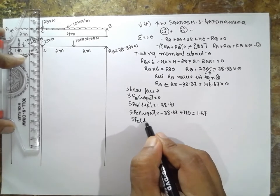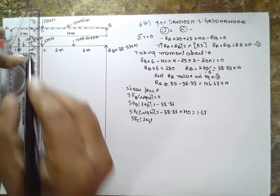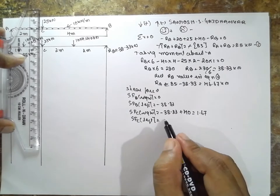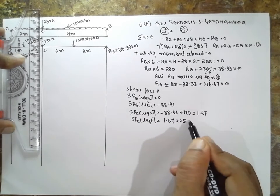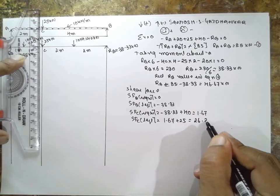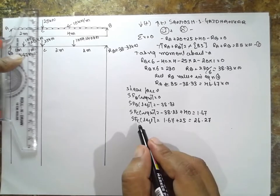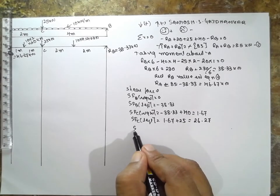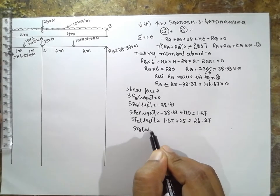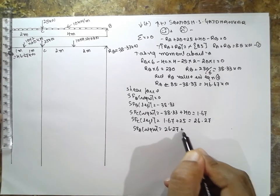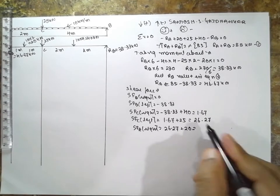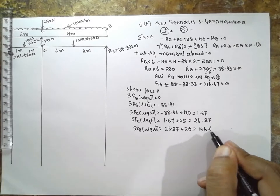On left side, SFC left side of this arrow, 1.67 plus 25, 26.27. Next at A, SF at A right side, 26.27 plus 20, answer is 46.67 kilonewton.